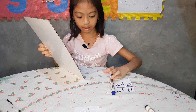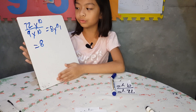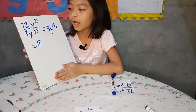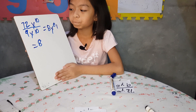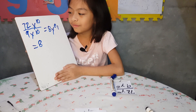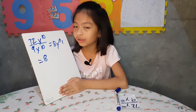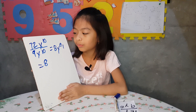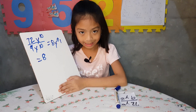So, the answer of 72y to the 10th power divided by 9y to the 10th power equals 8.